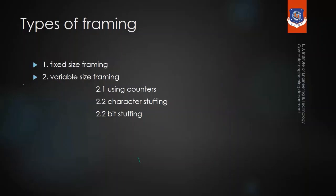There are mainly two types of framing: the first is fixed size framing and the second is variable size framing. Variable size framing is further divided into three types: character count (also known as using counters), character stuffing, and bit stuffing.